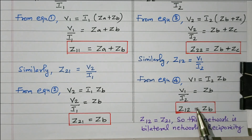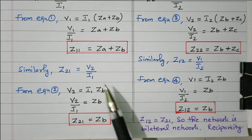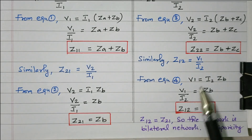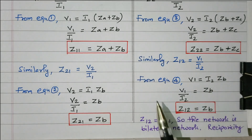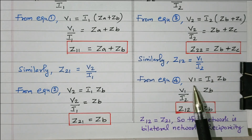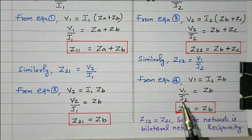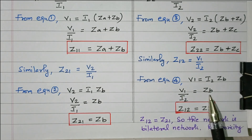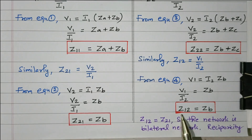For Z12: port AA dash is open circuited and I1 = 0, so Z12 = V1 / I2, which is input voltage divided by output current — the open circuit reverse transfer impedance. From equation 4, V1 = I2 × ZB, so V1/I2 = ZB. Therefore Z12 = ZB. So Z21 = ZB and Z12 = ZB — both are the same.